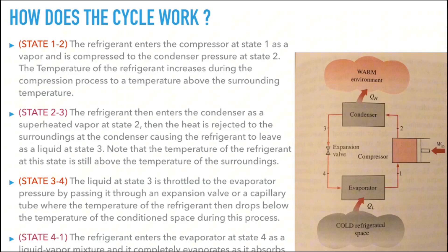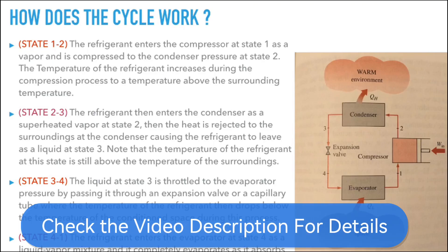The expansion valve simply drops the pressure of the refrigerant at state three, which in turn directly drops the temperature as well. As we transition from state three to four, the refrigerant temperature is now lower than the surrounding temperature. At state four — the entrance of the evaporator — the refrigerant enters as a liquid-vapor mixture and completely evaporates as it absorbs heat from the conditioned space. Starting as vapor at the compressor, becoming liquid after the condenser, then becoming a liquid-vapor mixture after throttling, the refrigerant absorbs heat in the evaporator and becomes gas again, and the cycle repeats.